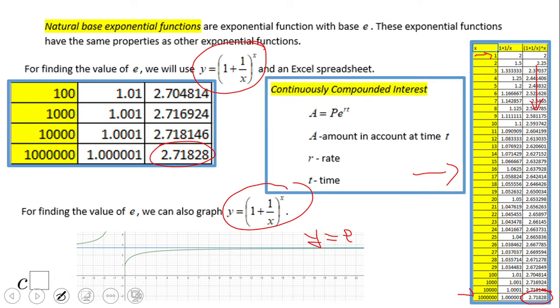One reason for using e is for calculating continuously compounded interest: A equals Pe^(rt), where P is the principal, e to the r where r is the rate, and t is the time you keep that money there. There are more other reasons for using e if you take more of my classes.